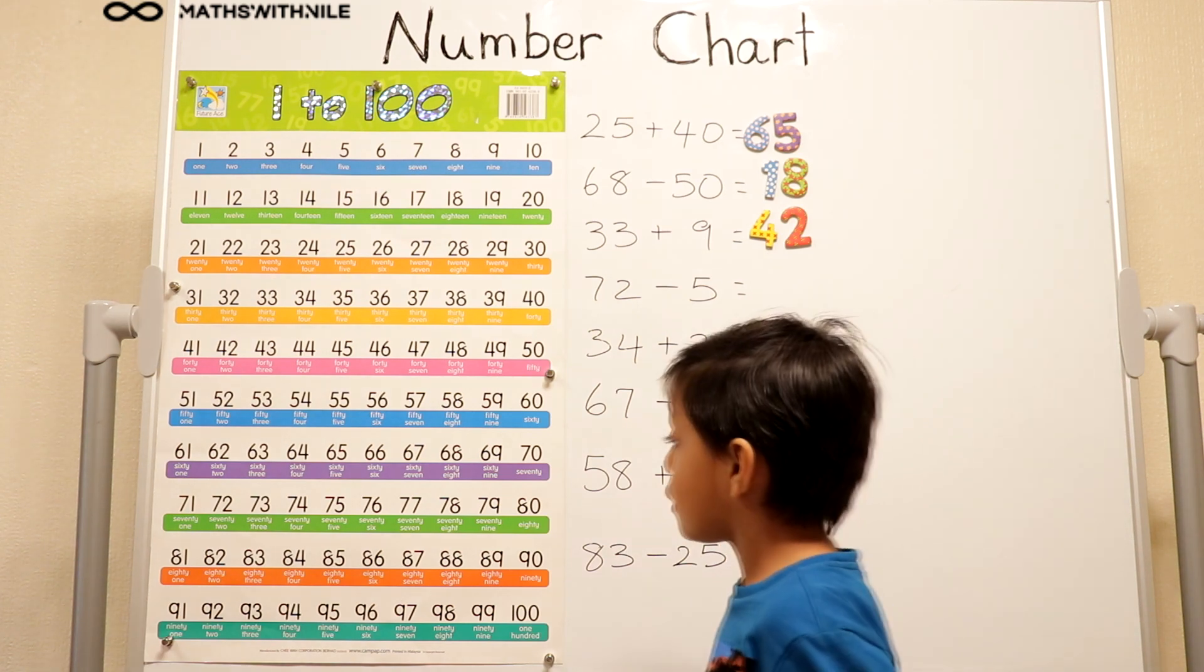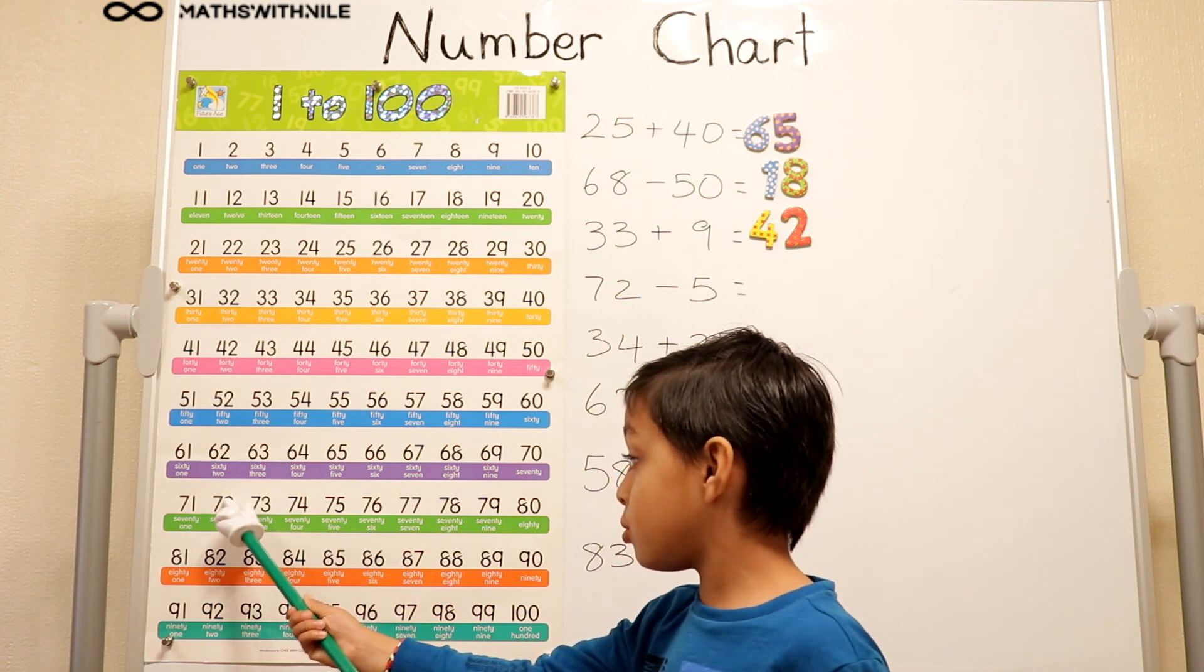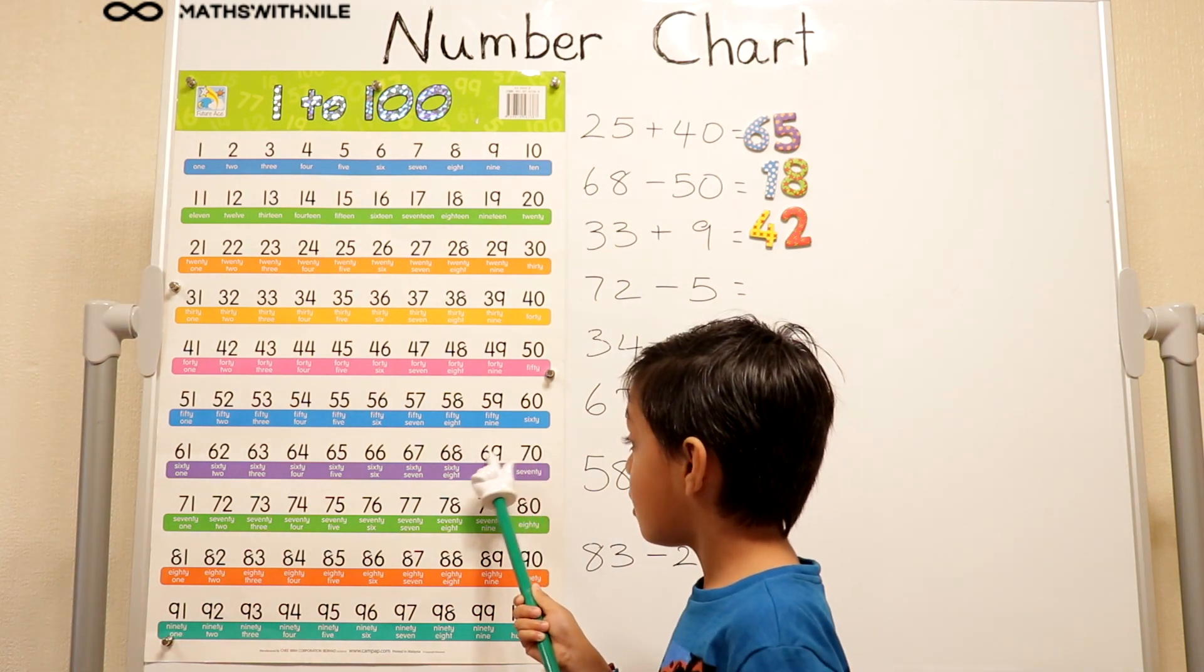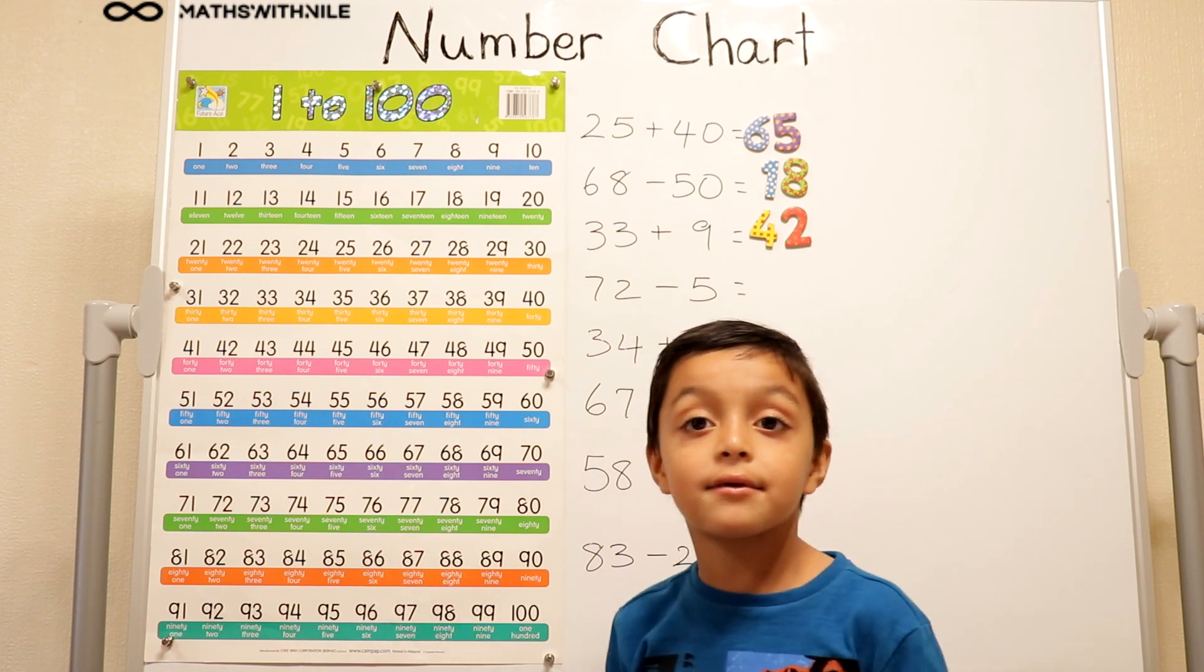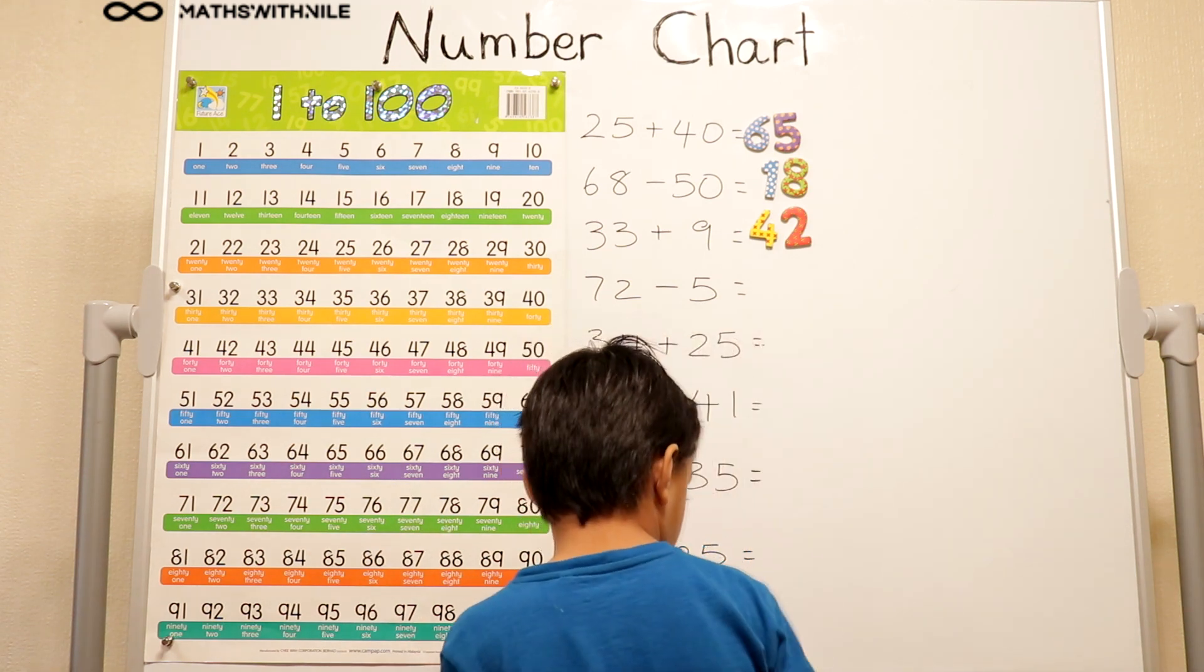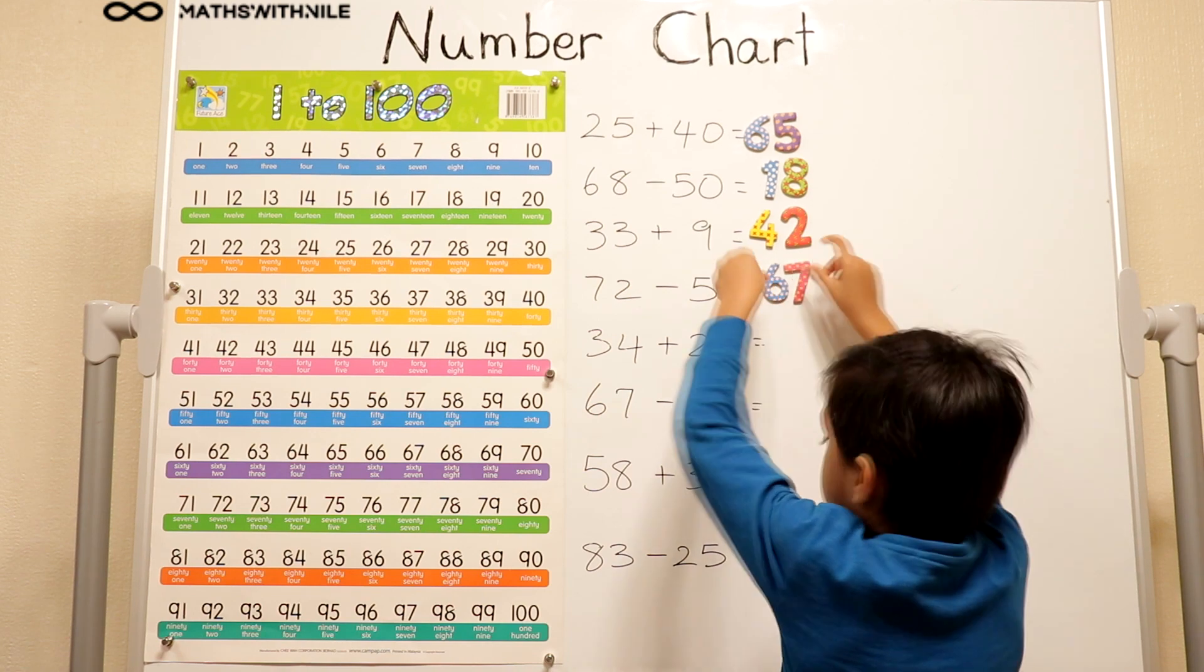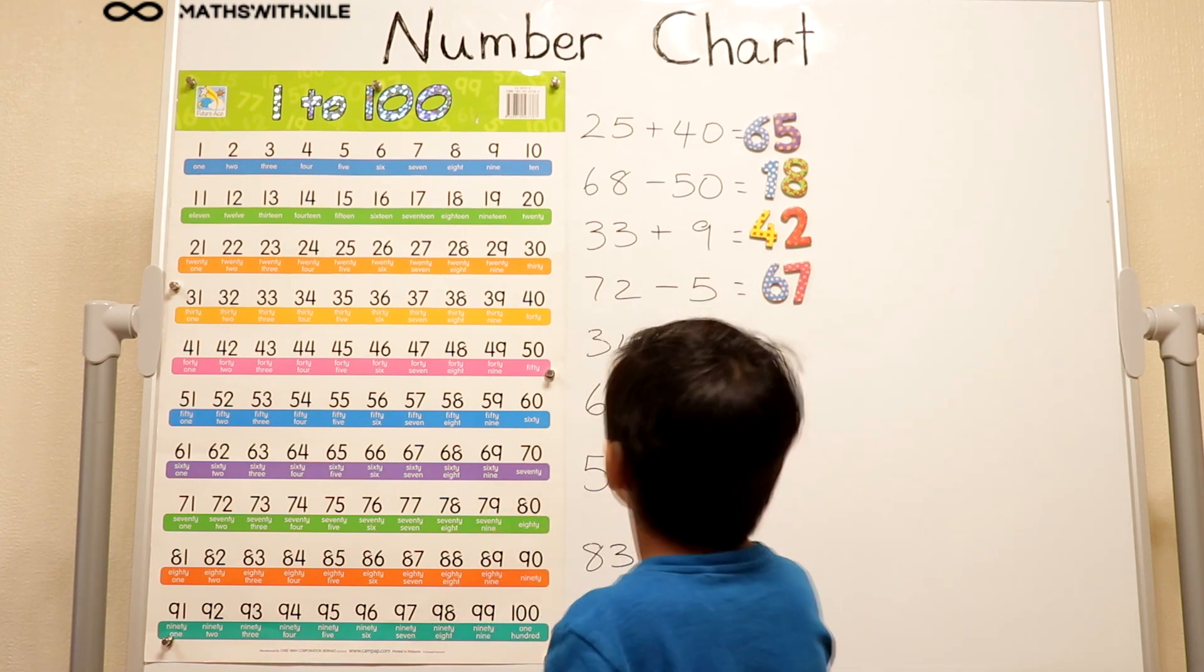72 take away 5. So we got 72 take away 1, 2, 3, 4, 5. 67. That's correct. So I'm going to put my answer. Okay. Maybe use your fingers for the other ones when you're working it out.